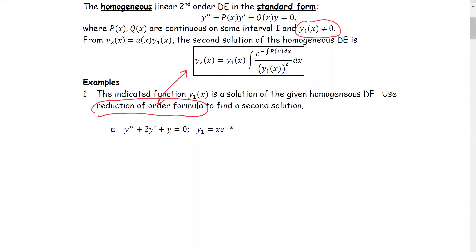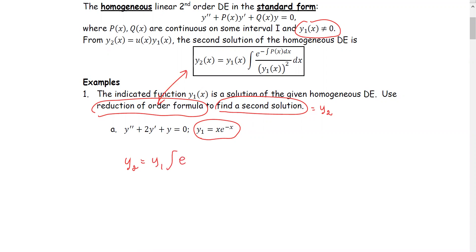Example 1. Given the differential equation y'' + 2y' + y = 0 and the known first solution y1 = xe^(−x), we want to find the second solution y2. Using the reduction of order formula: y2 = y1 · ∫[e^(−∫p dx) / y1²] dx.